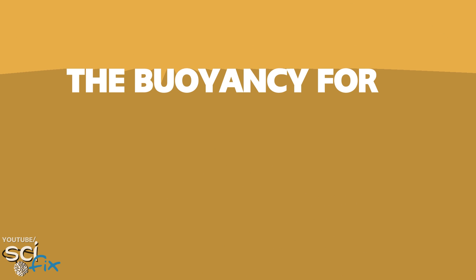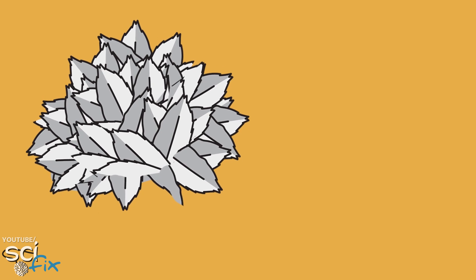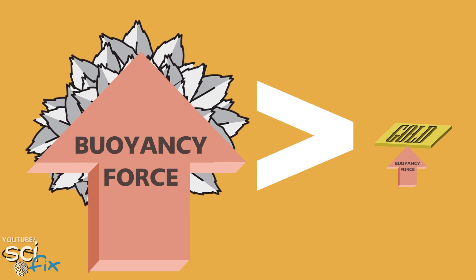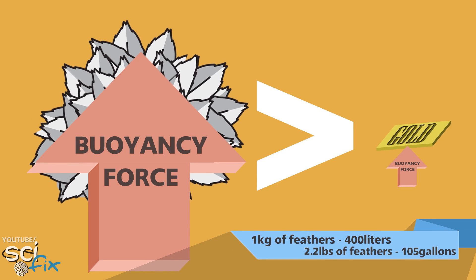Well, as we already know, the buoyancy force, also known as upthrust, lifts objects up. And when we put one kilogram of feathers, their upthrust is greater than the gold bars, because the feathers volume is much bigger, 400 liters to be exact.